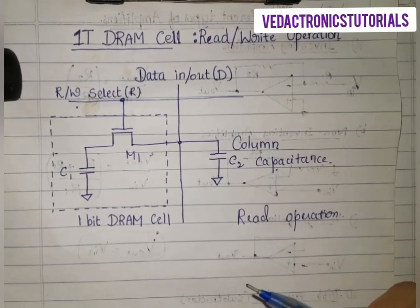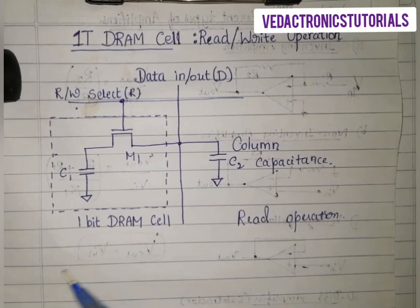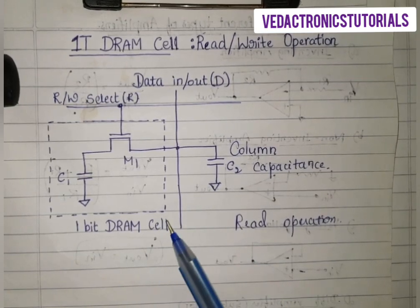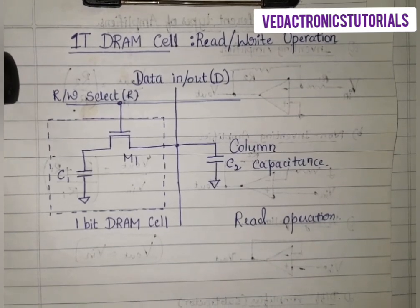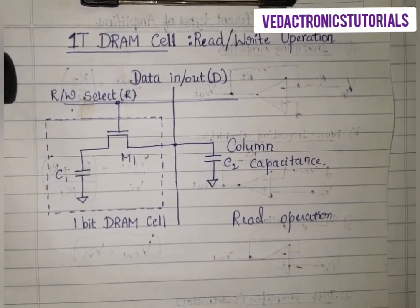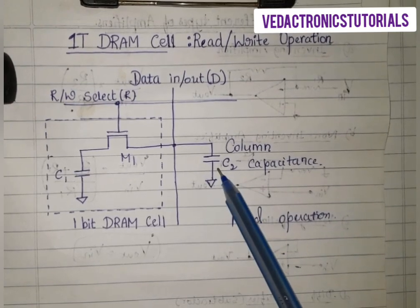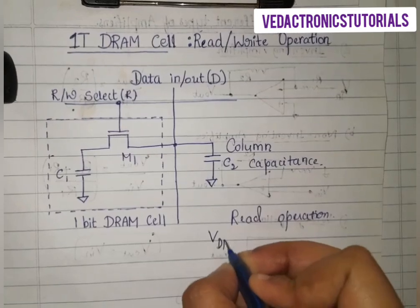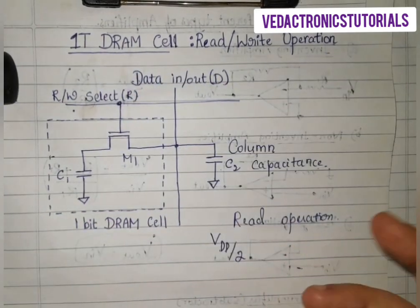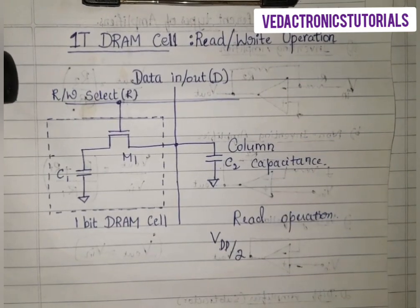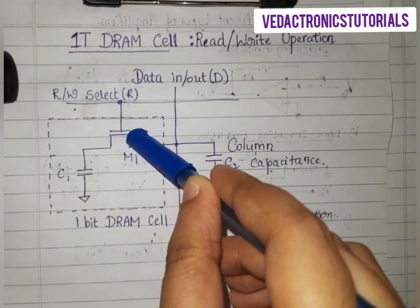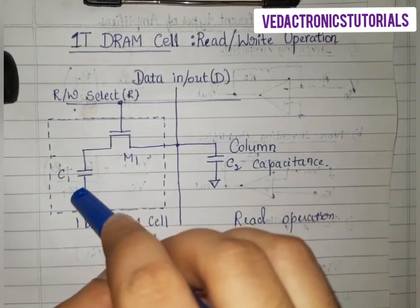In order to read the stored data out of a 1T DRAM cell, we have to build a fairly elaborate read-refresh circuit. The reason is that the data read operation on the 1T DRAM cell is by necessity a destructive readout. This means that the stored data must be destroyed or lost during the read operation. The read operation starts with pre-charging the column capacitance C2 to a value equal to VDD/2. Then the word line is pulled high in order to activate the access transistor M1, and charge sharing between C1 and C2 occurs.